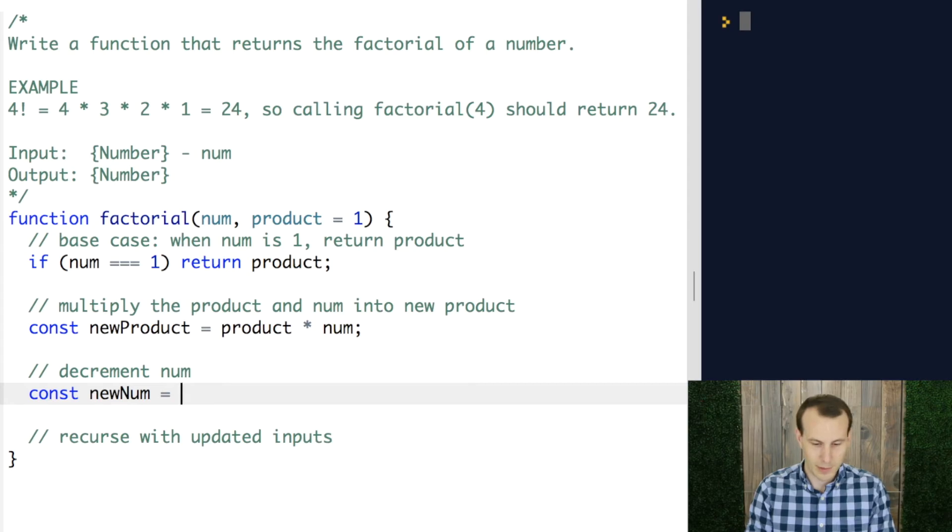And then, same thing with the decrement. I'm going to assign a new variable called new num. And this is going to become the number that we had just passed in minus 1.